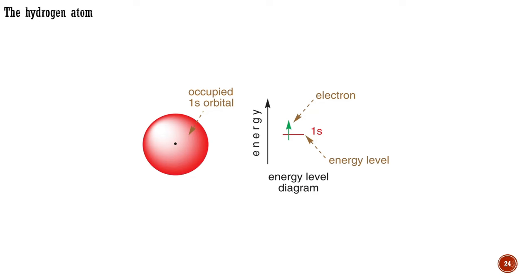Therefore, this picture of the 1s orbital gives a good representation of what a hydrogen atom looks like. We can also represent the 1s orbital as an energy level, with the electron that occupies it represented as a small arrow, which I will explain shortly.